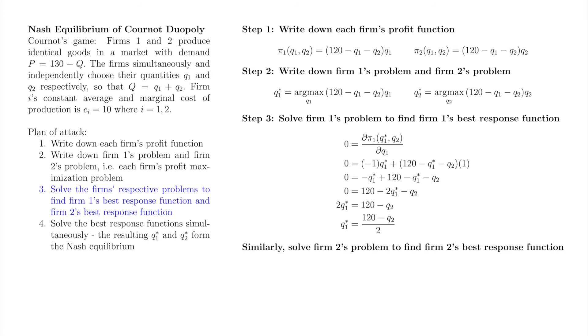Next, we need to find firm 2's best response function. We could solve firm 2's problem from step 2, just as we solved firm 1's problem. However, since the firms in this particular Cournot model have the same cost functions, we will instead find firm 2's best response function by appealing to symmetry and exchanging the places of q1 and q2 in firm 1's best response function.